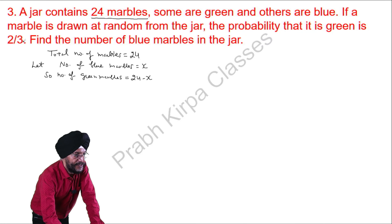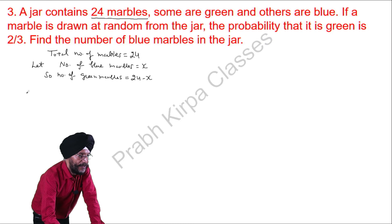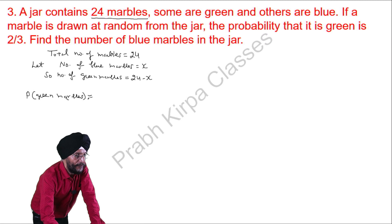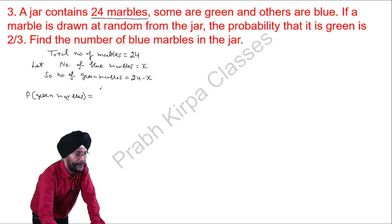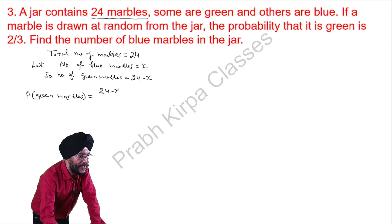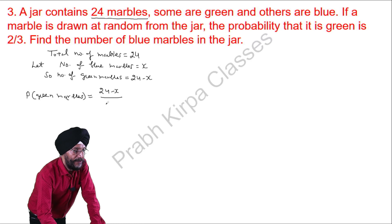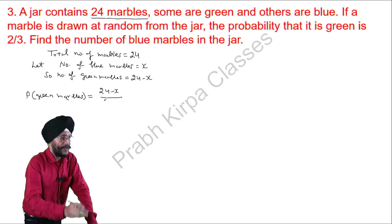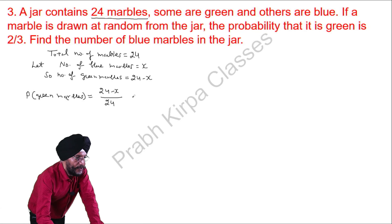The probability of green marbles is given in the question, but we will also calculate it based on our assumption. Probability of green marbles equals number of favorable outcomes divided by total number of possible outcomes. The favorable outcomes are the green marbles, so we write 24 minus x divided by 24.